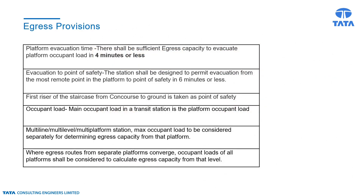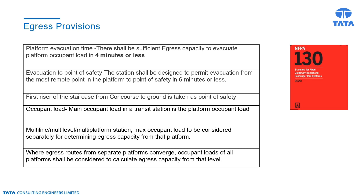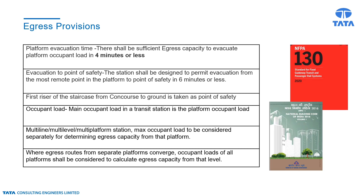Station design shall allow safe evacuation of occupants in an emergency. For egress and evacuation measures, the requirements as provided in NFPA 130 and NBC 2016 shall be followed. There shall be sufficient egress capacity to evacuate platform occupant load in four minutes or less. The station shall be designed to permit evacuation from the most remote point on the platform to a point of safety in six minutes or less.